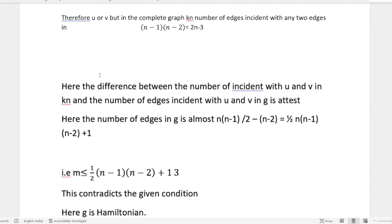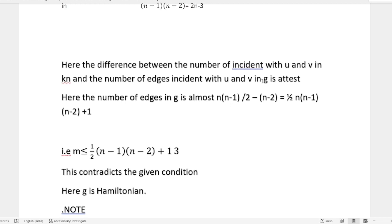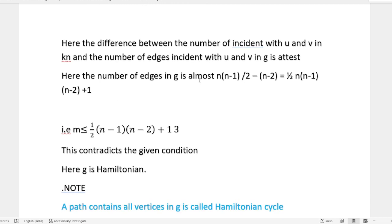Here the difference between the number of edges incident with u and v in Kn and the number of edges incident with u and v in G is at most. Here the number of edges in G is almost n(n-1)/2 - (n-2) = 1/2(n(n-1)(n-2)) + 1.